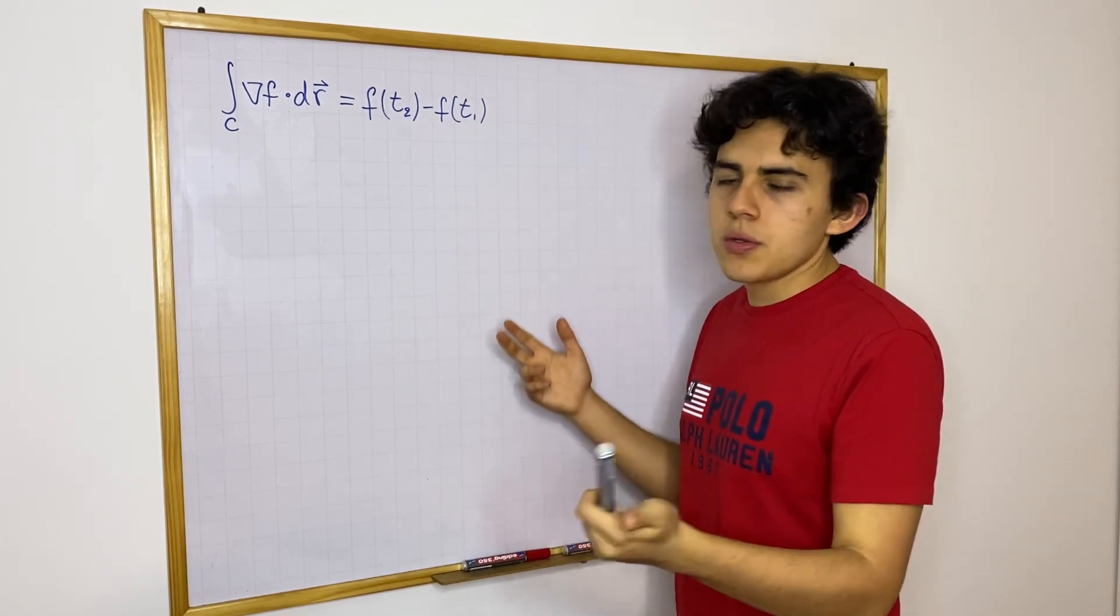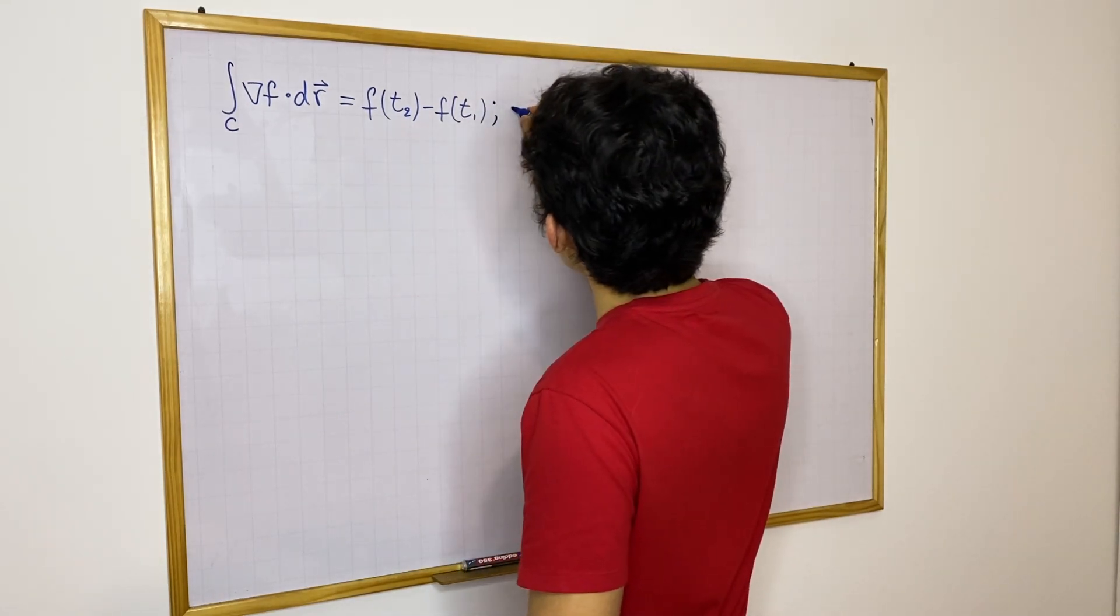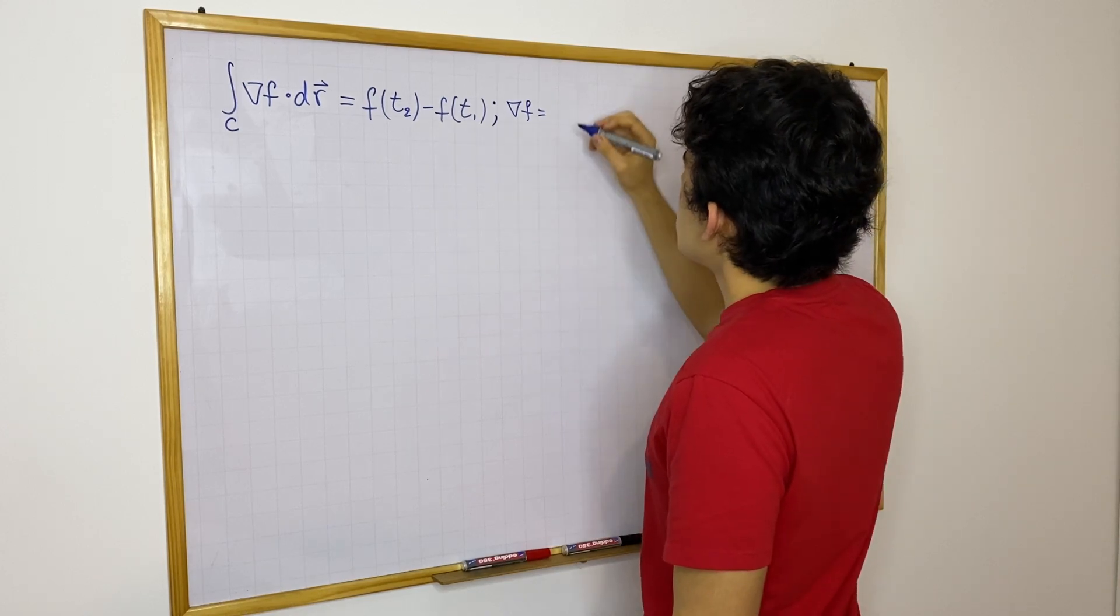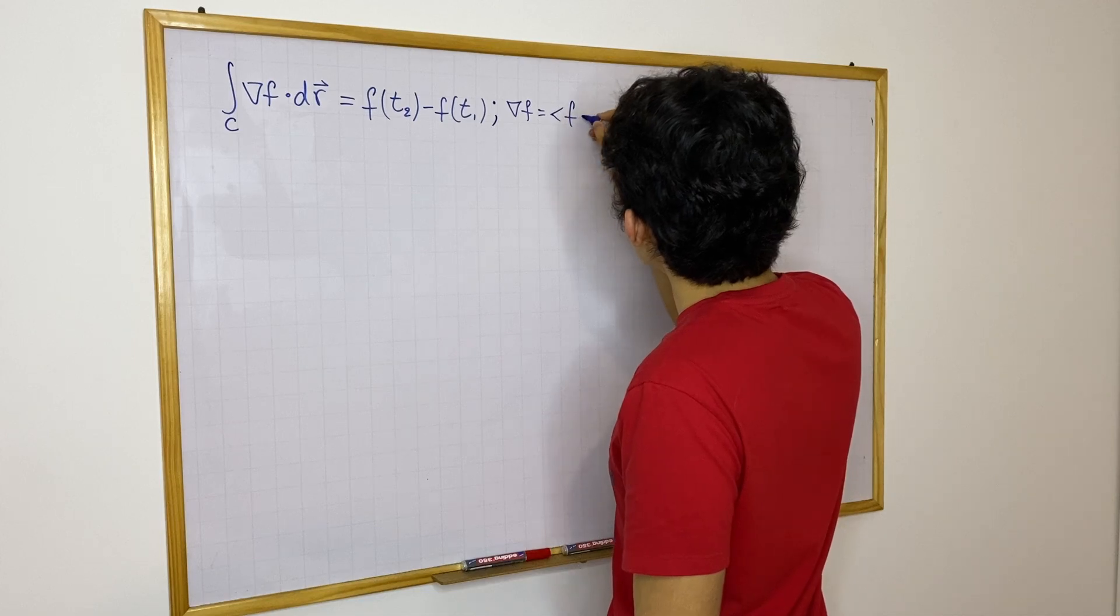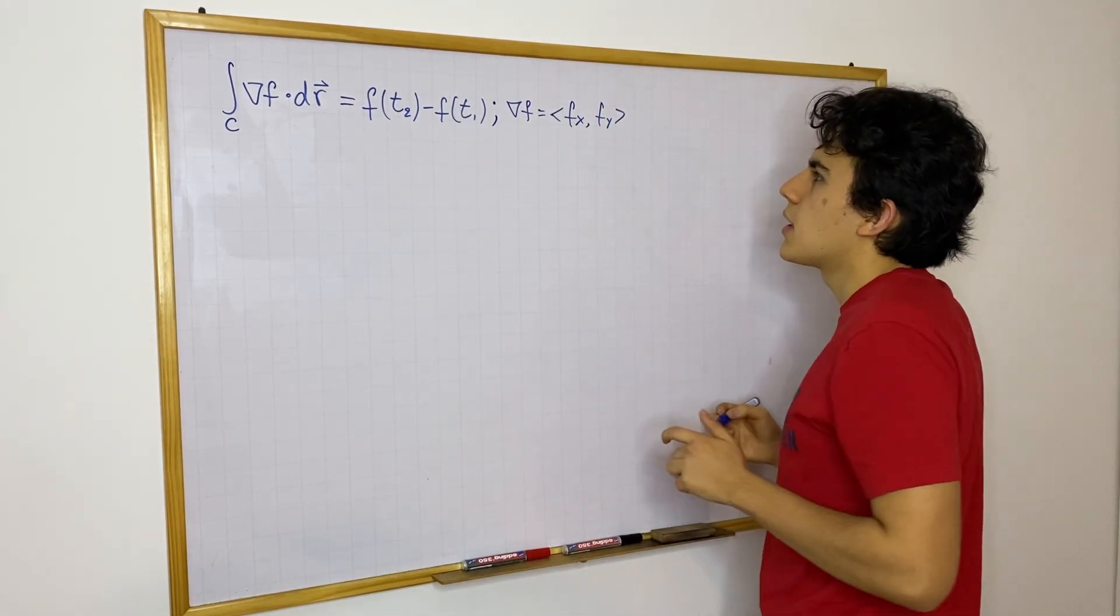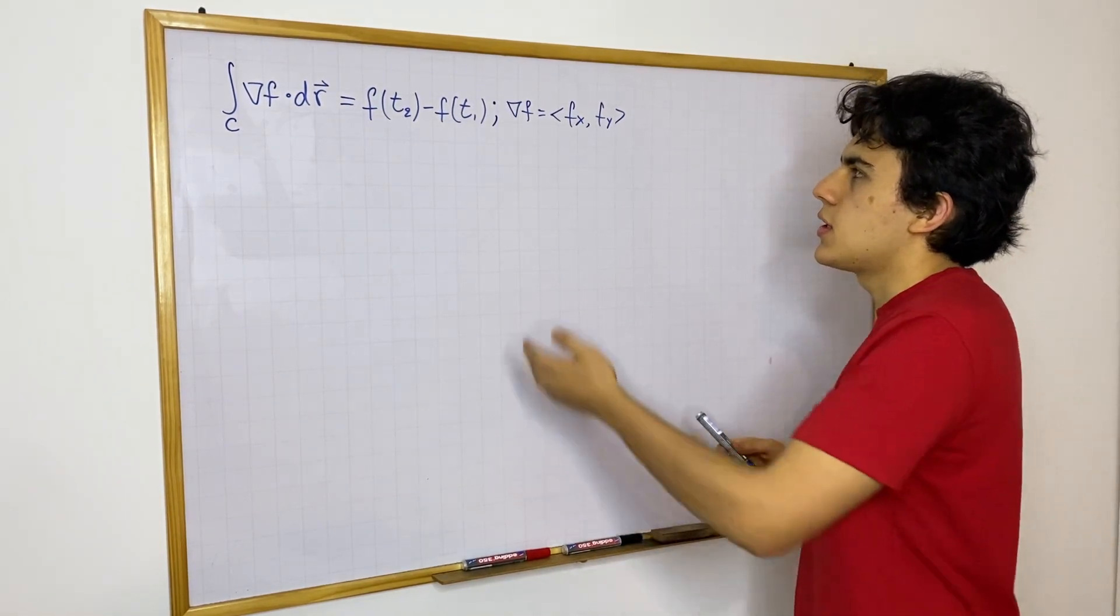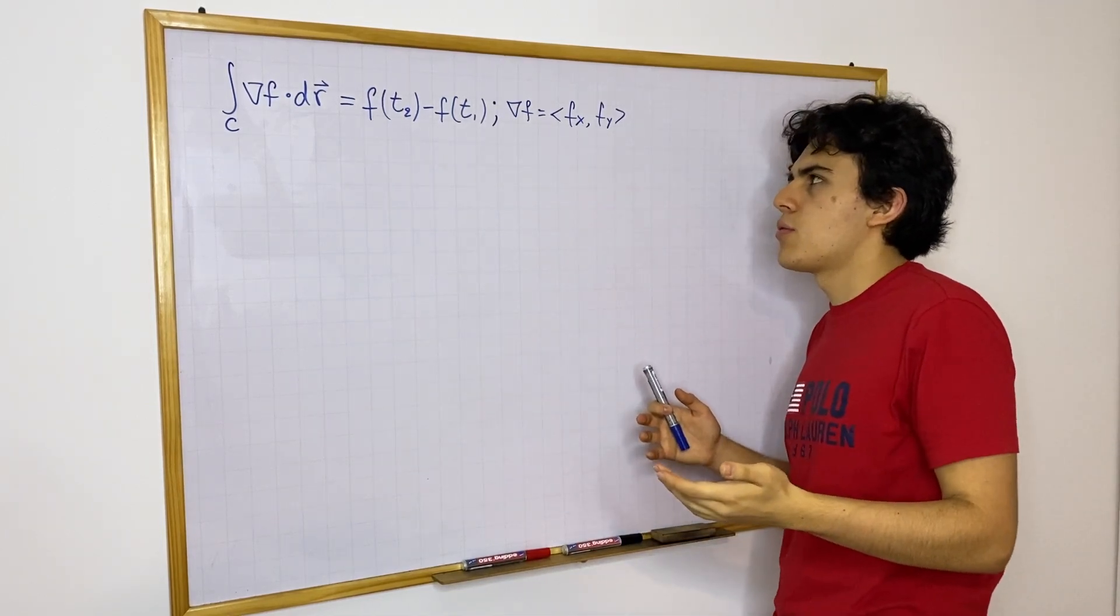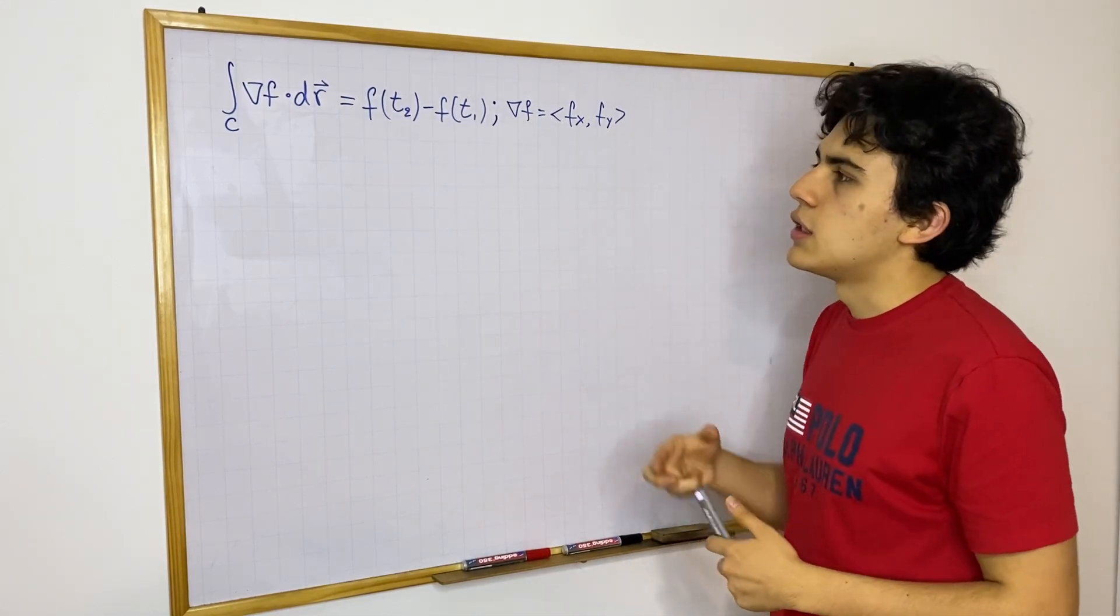So first of all, this will be a direct proof, so we're going to define a couple things here. I'm going to say that we can let del of f, the gradient of f, to be, yeah I'm going to use this notation, f sub x and f sub y. This is what we have. And this really makes sense because, well remember, the gradient field of f is going to be the partial derivative with respect to x and the partial derivative with respect to y. So this is the notation I'm going to use.